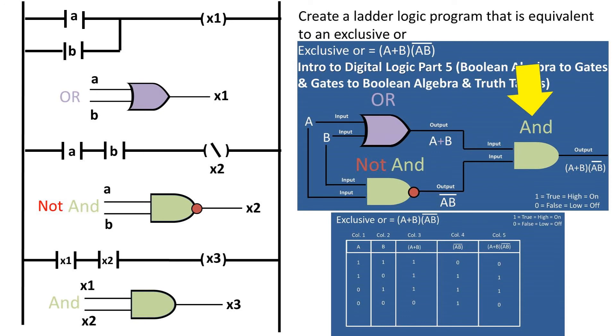For our final rung, we need to make an AND gate with outputs of the previous rungs as inputs of this rung. We can place two normally open contacts that are tied to the outputs in series connected to a normally open coil, which represents the output for our exclusive OR function.